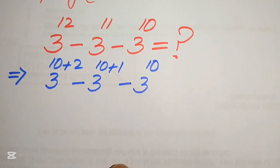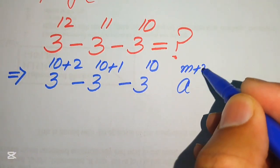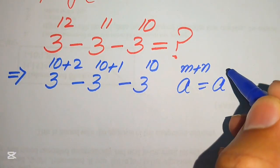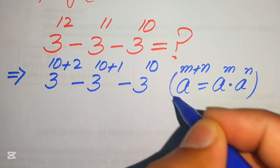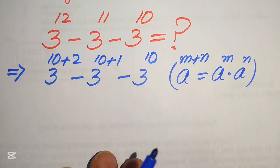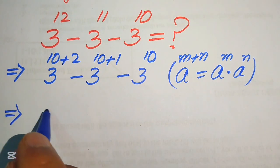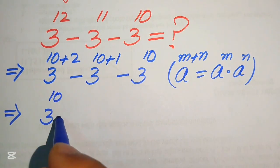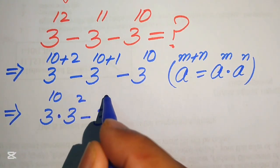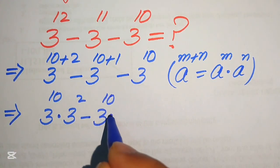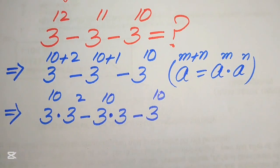Now we apply the exponent law: a to the power of m plus n equals a to the power of m multiplied by a to the power of n. According to this law, we break the exponents and rewrite the expression as 3 to the power of 10 multiplied by 3 squared, minus 3 to the power of 10 multiplied by 3, minus 3 to the power of 10.